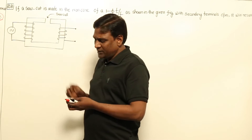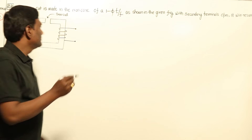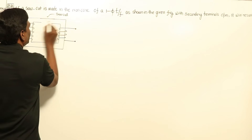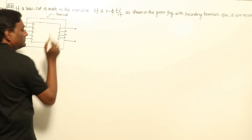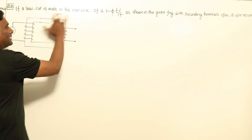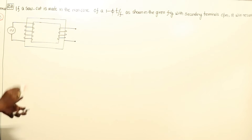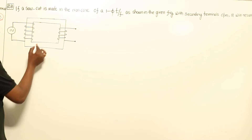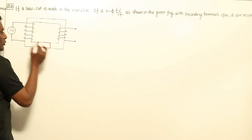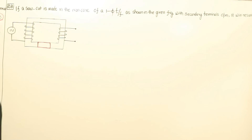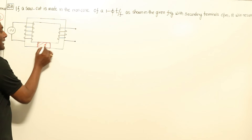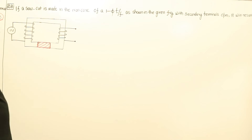At starting, a complete transformer will be there with a complete core. After that, the question will be asked: if I remove some part of magnetic material and fill that with non-magnetic material, what are the repercussions?